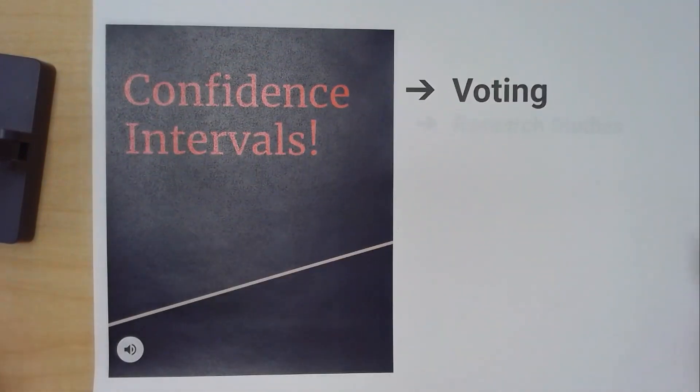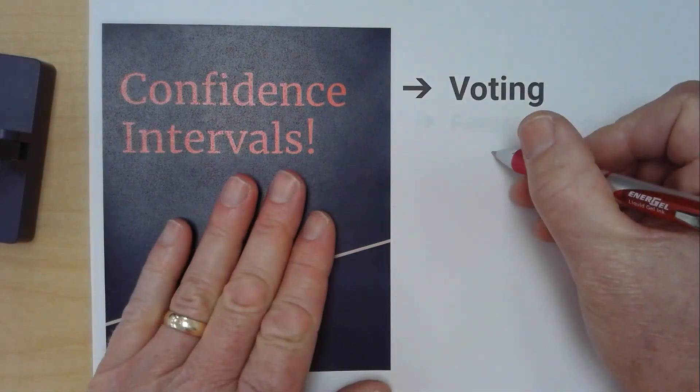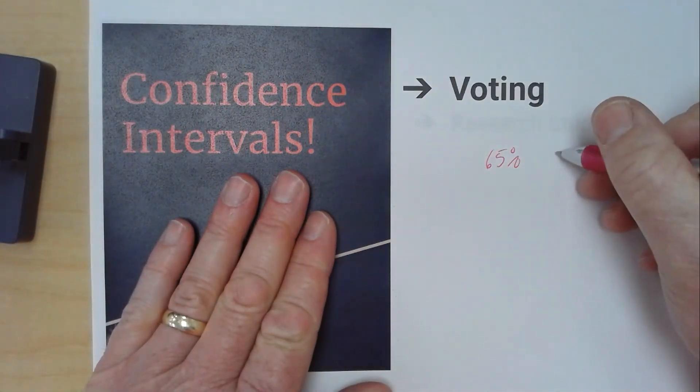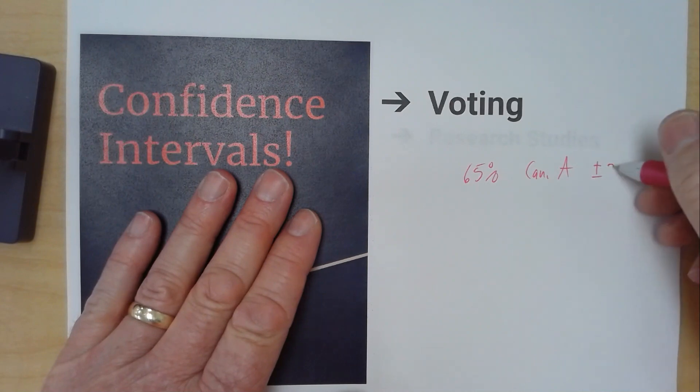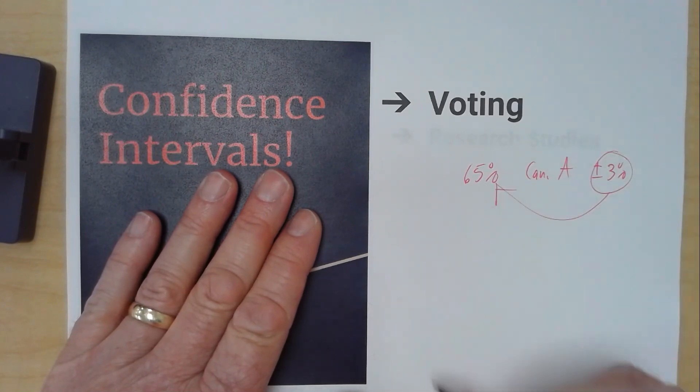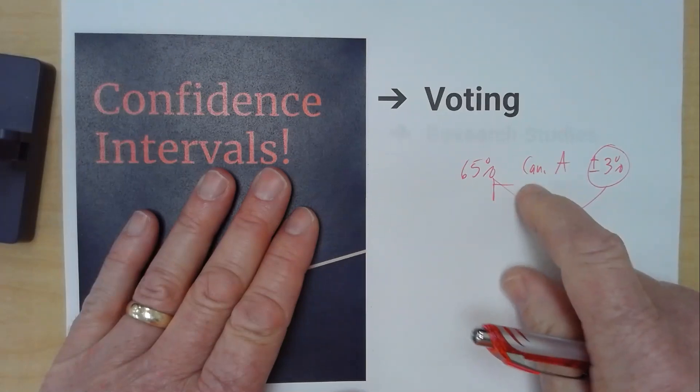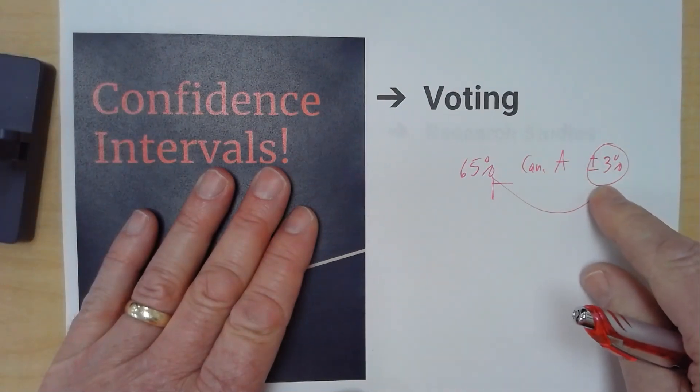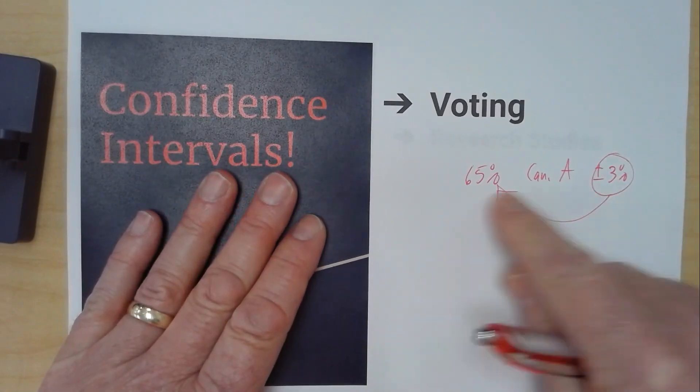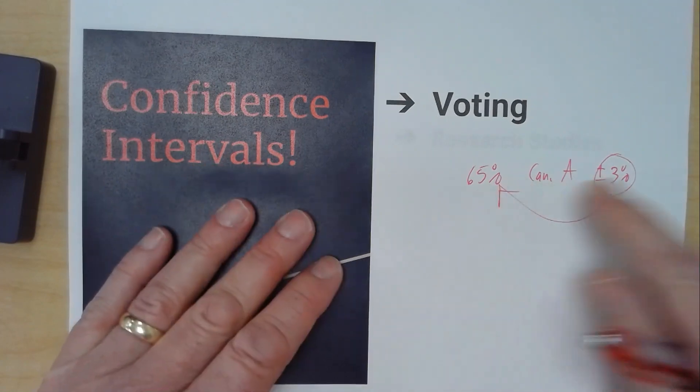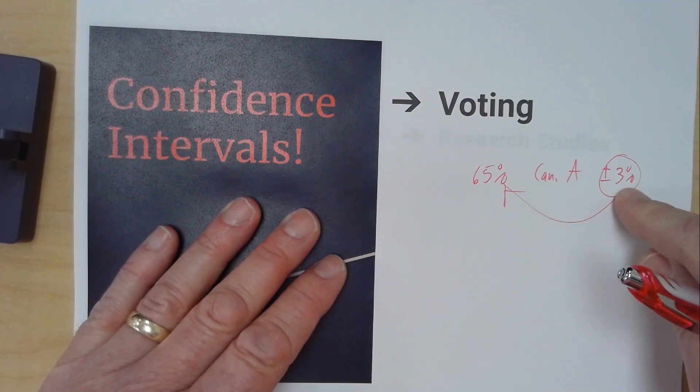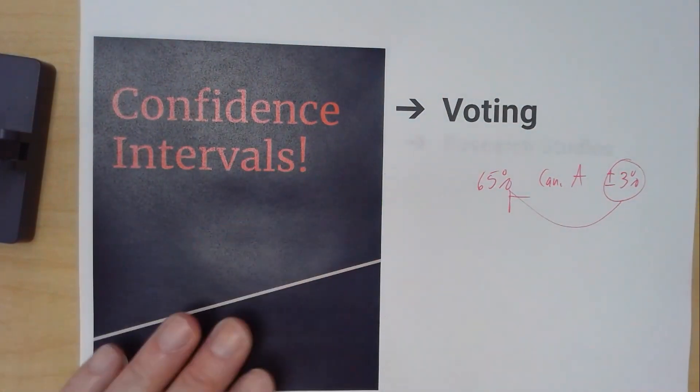Confidence intervals. Confidence intervals are like how confident are we that we are right in our situation. If we go out and we take a sample and we say that 65% are going to vote for candidate A, then we would say we are plus or minus 3%. We think 65% are going to vote for candidate A, but we say we're plus or minus 3%. We're going to be confident that it's going to be in that range. So it could be as low as 62%, it could be as high as 68%. Statistics allows us to come up with this margin of error, and that's how confident we are that a situation is going to happen.